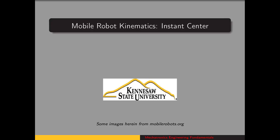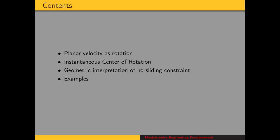We're going to consider the relationship of the concept of instant center, or instantaneous center of rotation, to mobile robot kinematics. First we'll cover planar velocity as a rotation about a point. This brings up the idea of instantaneous center of rotation, and we'll use this to look at a geometric interpretation of the no sliding constraint for wheels, and wrap this up with a couple of examples.